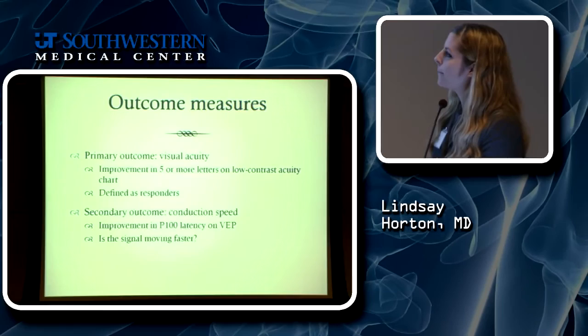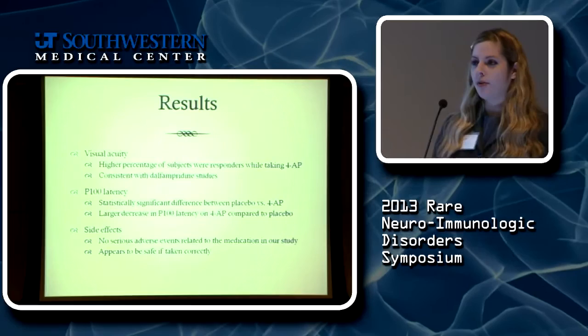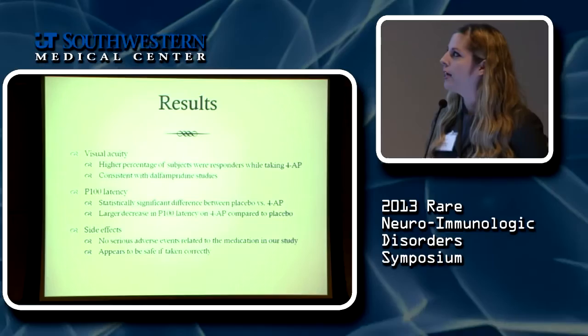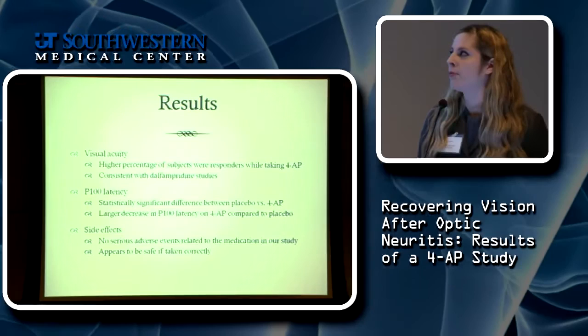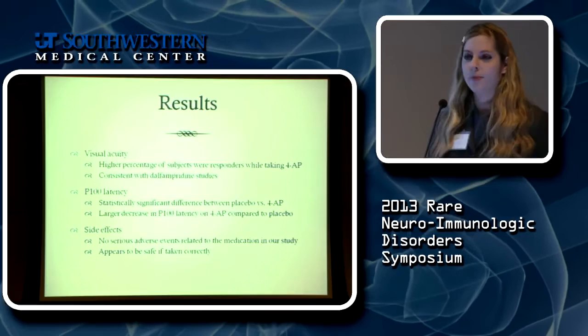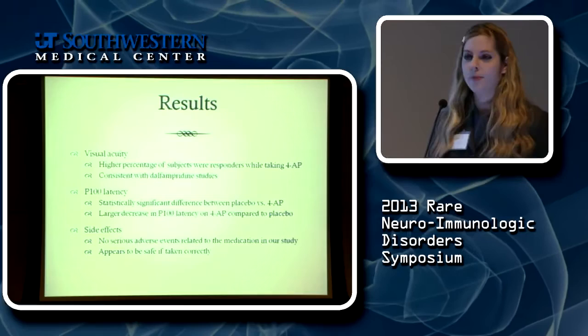Our results: we found a higher percentage of subjects were responders — seeing at least five more letters on the visual acuity chart — while taking 4-AP compared to placebo. This was consistent with the Ampyra studies. Interestingly and very excitingly, we also found a statistically significant difference in P100 latency between placebo and 4-aminopyridine: those on 4-AP had a faster P100 latency, meaning the medication was making the signal travel faster in the optic nerve.